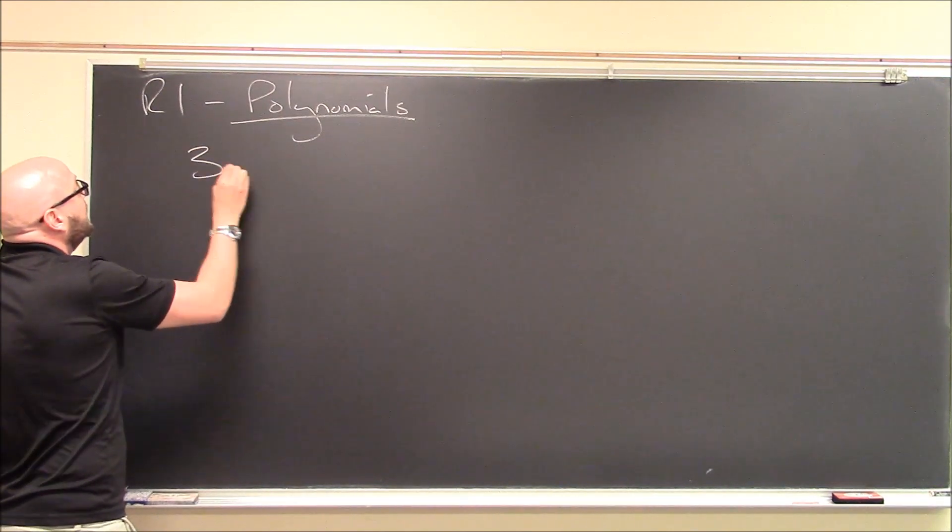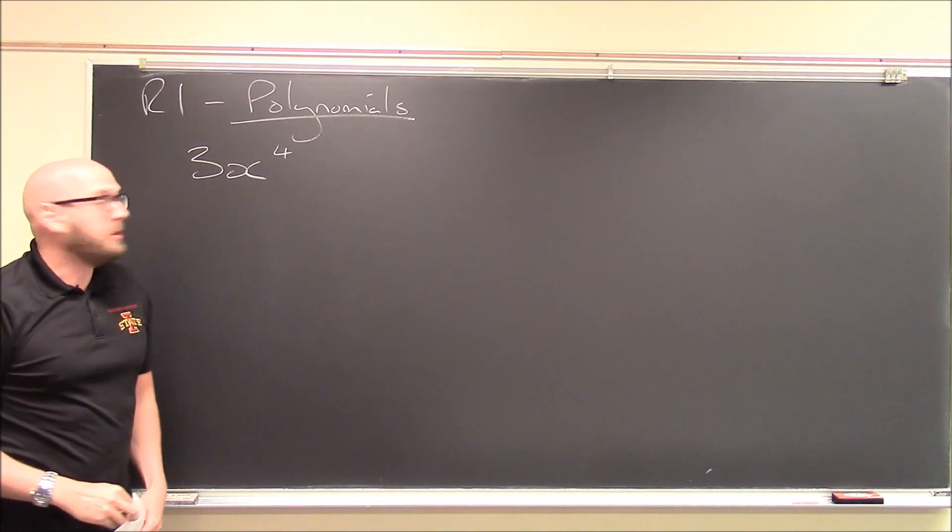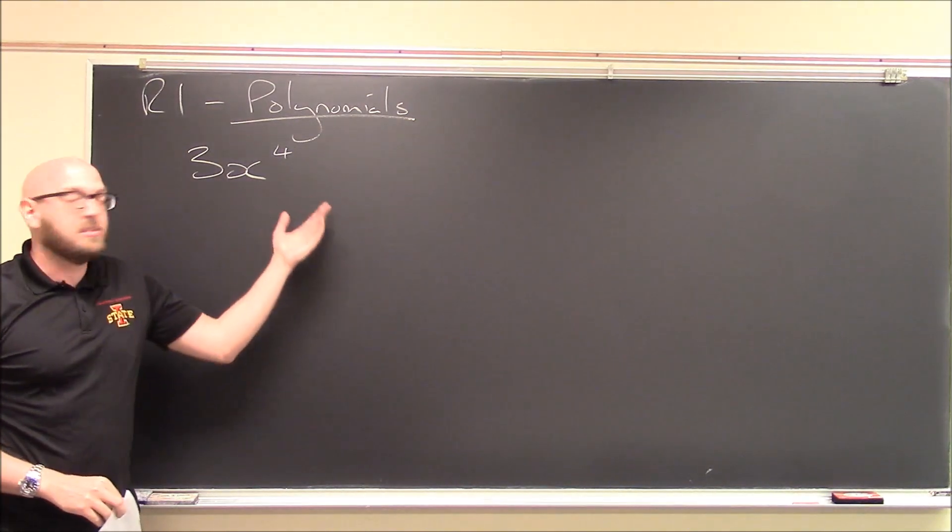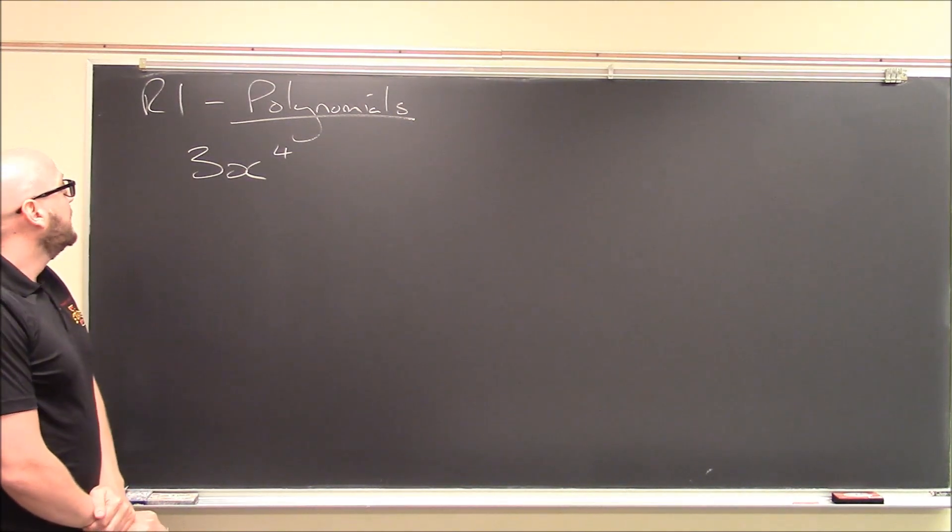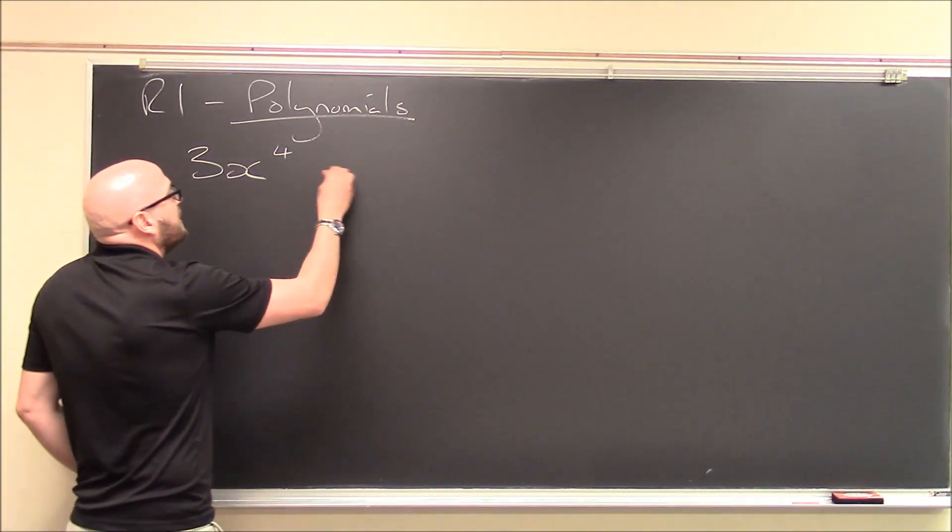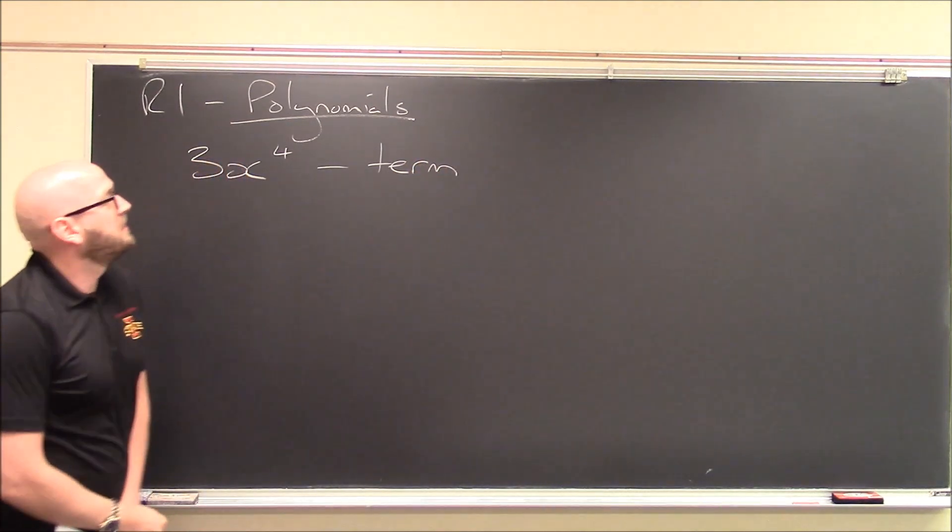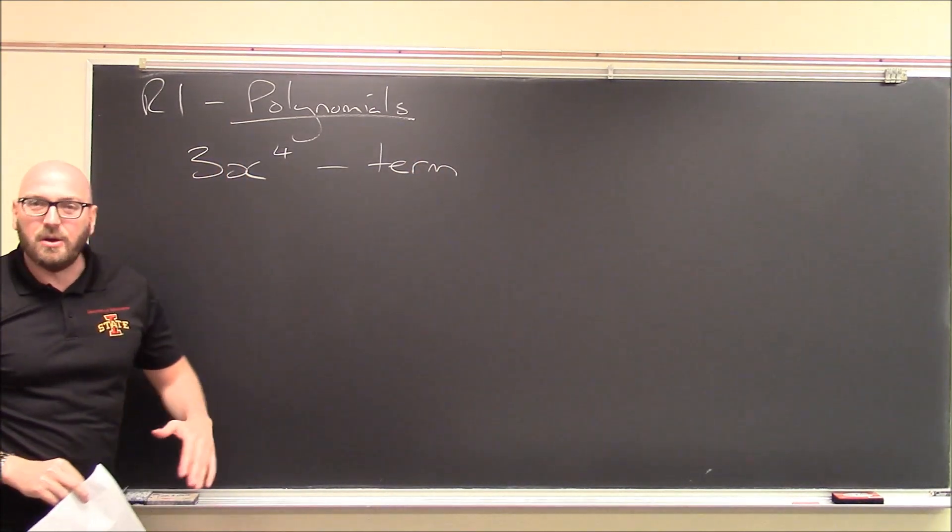Well, here's an example. 3x to the power of 4. By the way, I always italicize my x's, so there's what my x's will look like. 3x to the power of 4. Technically, this is a polynomial, but it's a very special polynomial in that it consists of only a single term. So instead of calling this a polynomial, let me just for now call this a term.